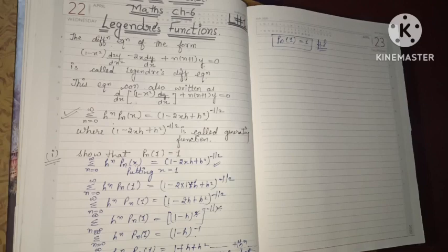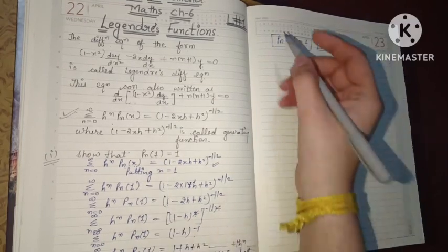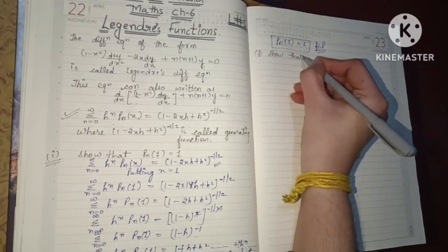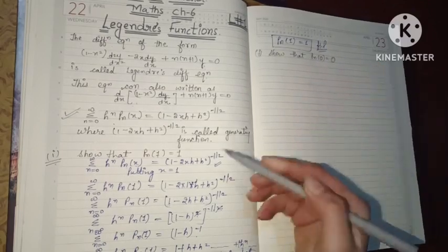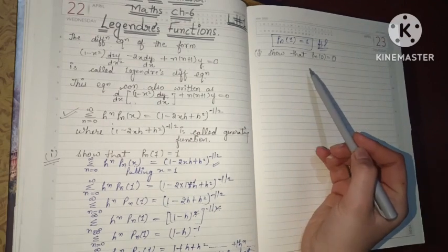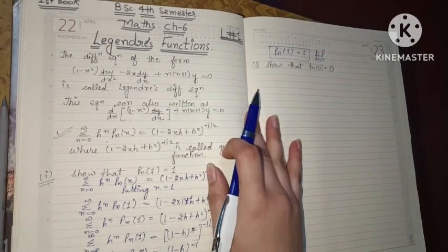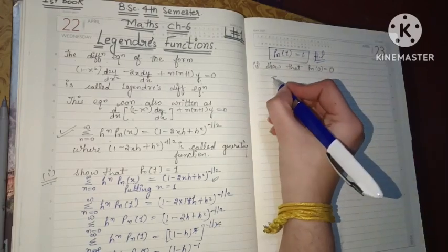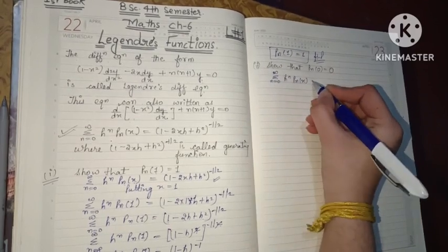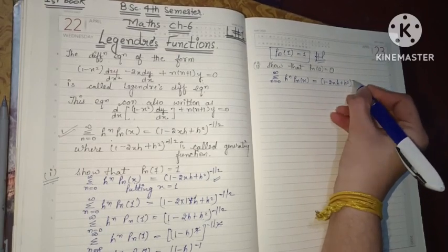Exactly the same method we used before — apply the formula step by step. First write the formula: summation n equals 0 to infinity h to the power n times P_n(x) equals to (1 minus 2xh plus h squared) to the power minus 1/2. Now put x equals to 0. The LHS remains as summation n equals 0 to infinity h to the power n times P_n(0), and the RHS becomes (1 minus 0 plus h squared) to the power minus 1/2.